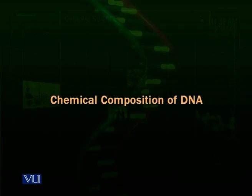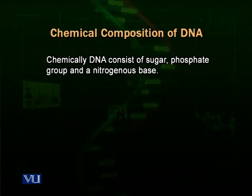Now we talk about the chemical composition of chromosomes. From biochemistry experiments and X-ray diffraction studies, it is found that chemically DNA consists of three major ingredients: a sugar, a phosphate group, and a nitrogenous base.